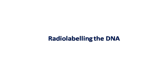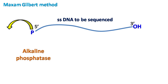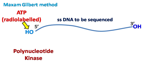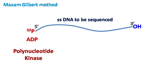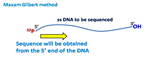The first step of this method involves radiolabeling of the DNA to be sequenced. The phosphate at the 5' end of DNA is removed using alkaline phosphatase enzyme. Then, using the enzyme polynucleotide kinase and radiolabeled ATP, the radiolabel P32 is transferred to the 5' end. This labeling from the 5' end allows sequencing information to be obtained from the 5' end of the DNA.